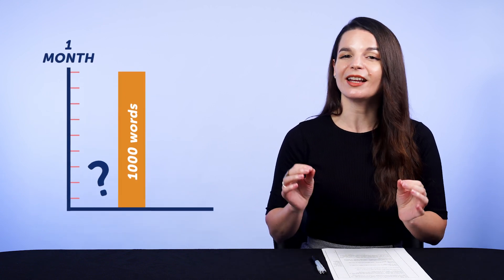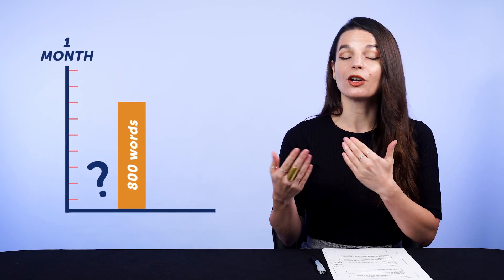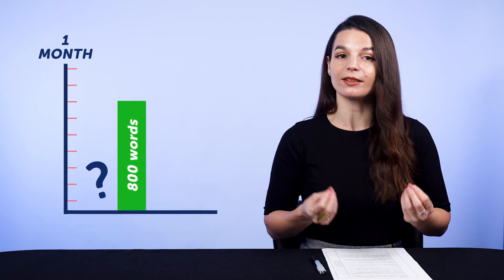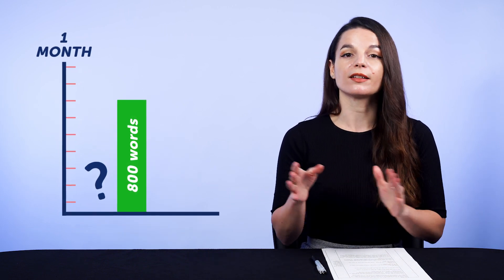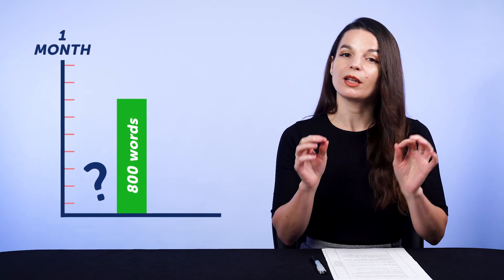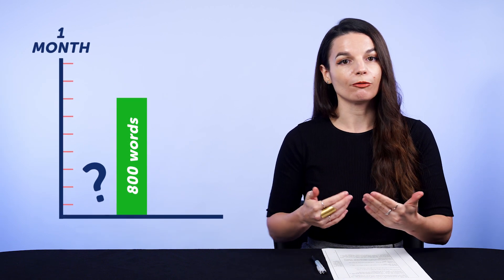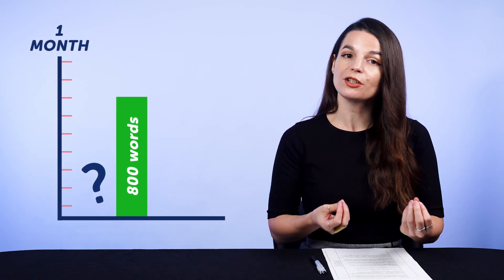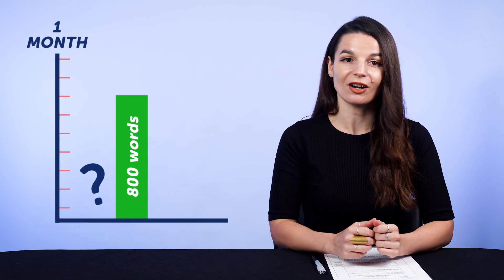Next, measure your results — your output. You have to start doing output, whether it's a journal, texting your teacher, writing comments on our lessons, or having conversations. You have to have that output and measure it. So if your goal is to learn 1000 words in one month but you only learned 800, then you know that with your current input, 800 words is a realistic number. And because you know this, you can improve by doubling your input or changing to a more efficient study method, like learning with flashcards.